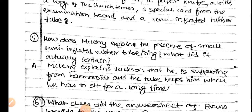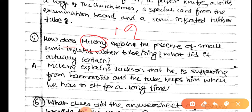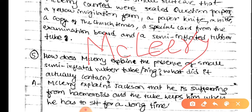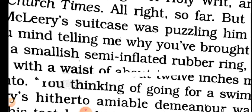Question number five: How does McClory explain the presence of a small semi-implemented rubber ring? Okay, so this is a ring — insert the book in a semi-implemented rubber ring.